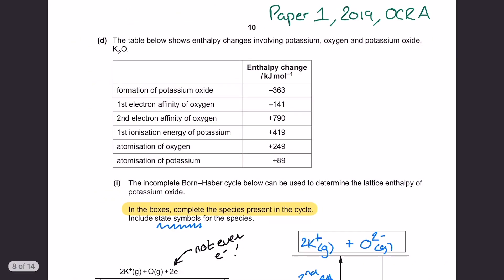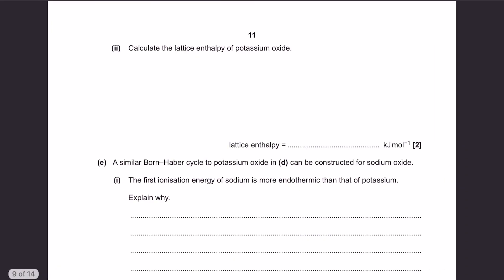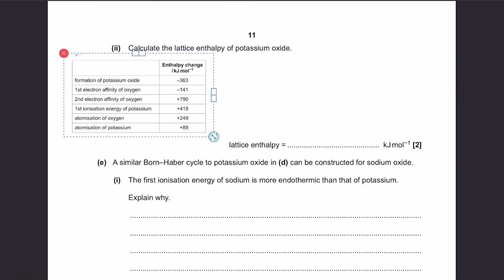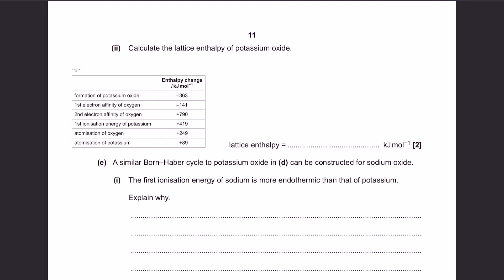Moving on, next up we have a lattice enthalpy calculation, which is rather frustratingly on a different page from the table of data, so we'll snip it and take it with us. Now because the formula for the giant ionic lattice we are using, potassium oxide, has a multiple of an ion in its formula, the potassium, it means we're going to need to multiply some of the data unique to that element. In this question's case, because it's the potassium, we're going to need to multiply the ionization energy by two and the atomization energy by two, as these are the only changes unique to just the potassium.